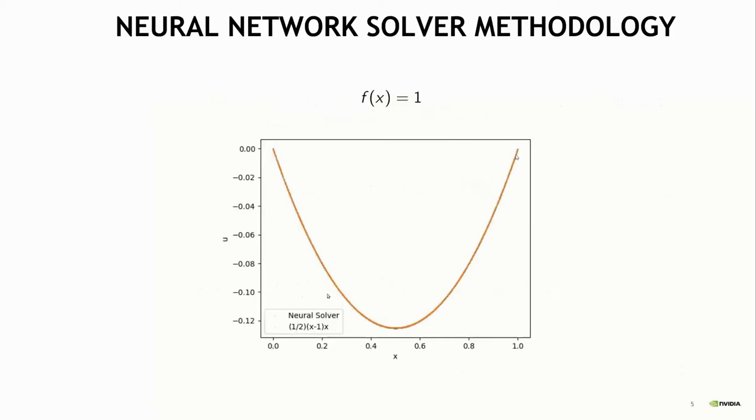For this 1d problem, if you use this method to solve the problem, this is the result you get. The orange line is the exact solution and the blue line, which is behind this orange line, is the neural network solution and it's virtually a perfect match.